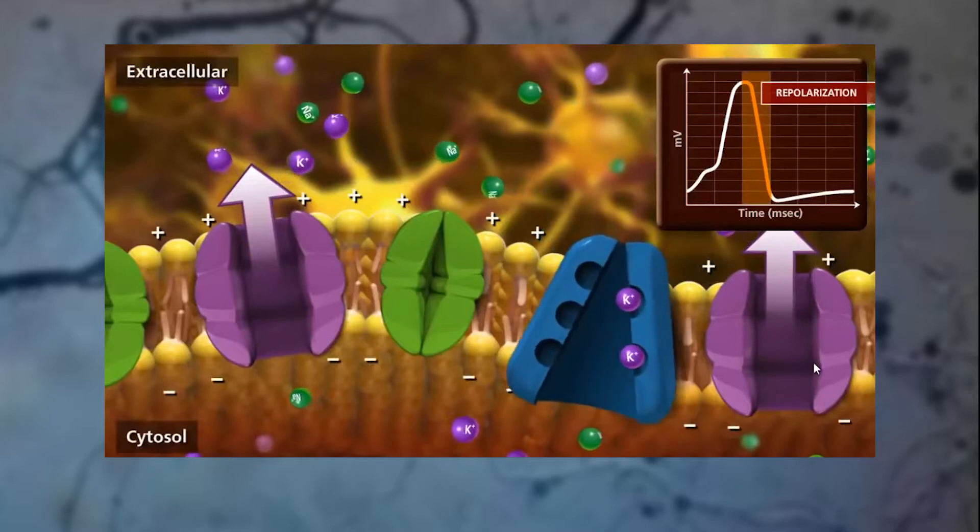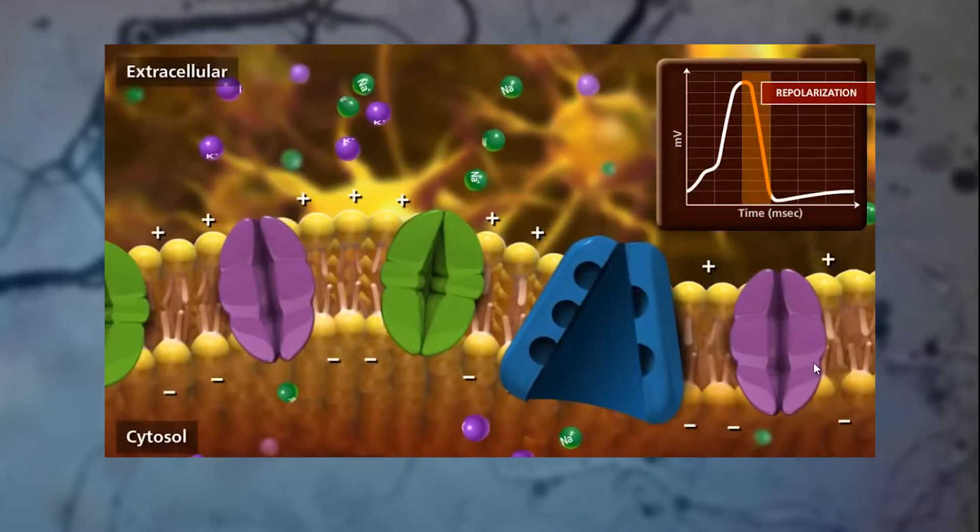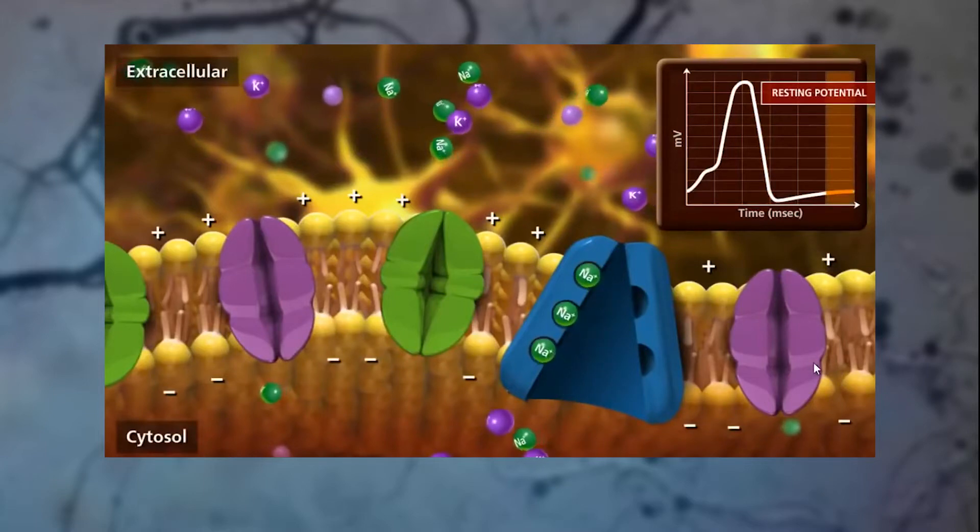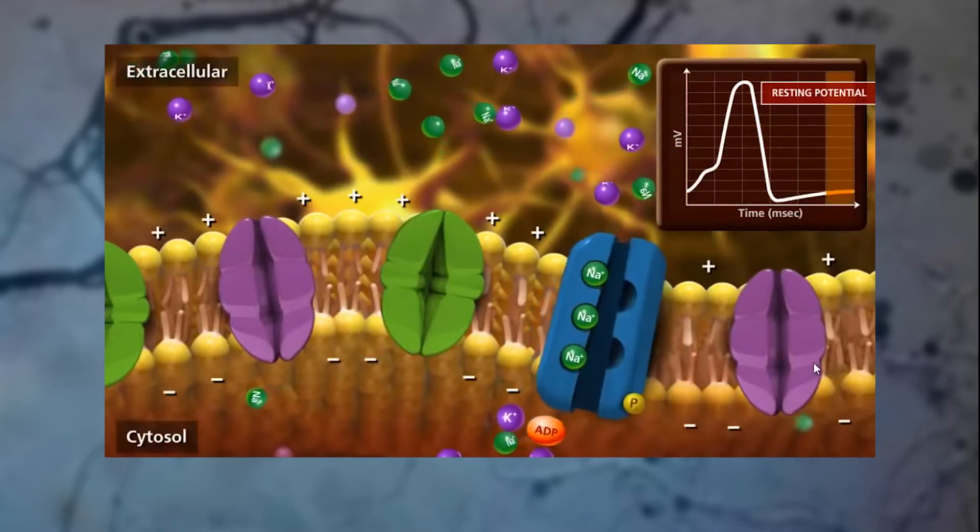After firing, a neuron's potential will often overshoot, descending below the resting potential. This leads to a refractory period during which the neuron is so hyperpolarized that it cannot fire.